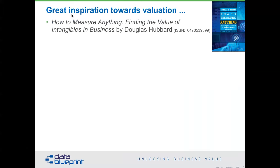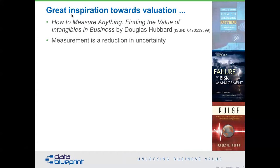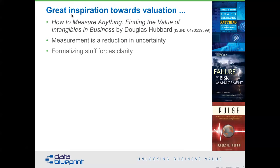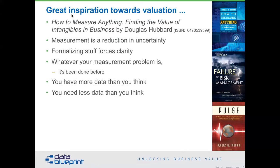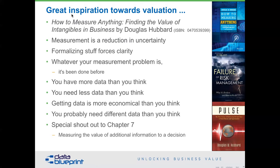One of my favorite books — and I've sold many more of Douglas Hubbard's books than my own — is How to Measure Anything. The first thing he points out is that measurement is a reduction in uncertainty; it's not an exercise in precision. It formalizes stuff, which forces clarity. When you start to write it down, it gets more concrete. You have more data than you think, you probably need less data than you think, getting data is more economical than you think, and you probably need different data. Chapter 7 even has a calculation for the value of delaying a decision to gather more information.